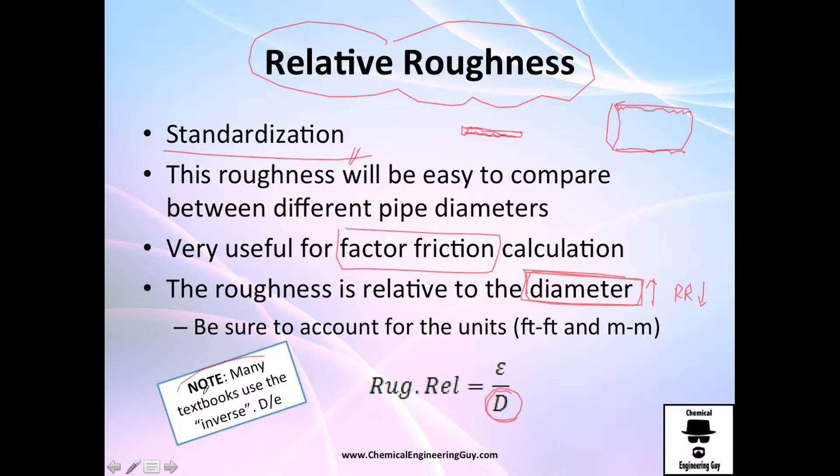Just a note, many textbooks or reference books will use the inverse, which is the diameter divided by the roughness. I don't like to use it because it's a huge number, and I'm used to using numbers with scientific notation, for example, 5 to the minus 3 power or so on.